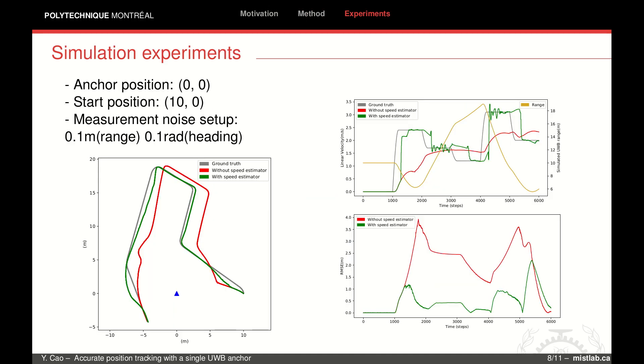We first present simulation results for our system. The left figure shows the EKF trajectories with and without our speed estimator. The green line with a speed estimator can closely track the true trajectory. From the right top figures, we can see the green line is the speed estimation from EKF using our speed estimator, which is able to match the gray true velocity most of the time. Despite some delays, our algorithm can still track the actual speed.